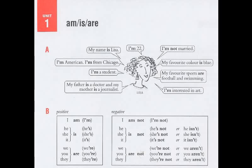Negative forms: I am not. He is not. She is not. It is not. We are not. You are not. They are not. Short forms: I'm not. He isn't. She isn't. It isn't. We're not or we aren't. You're not or you aren't. They're not or they aren't.